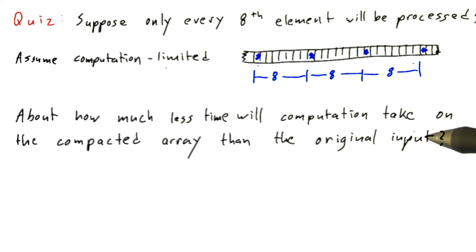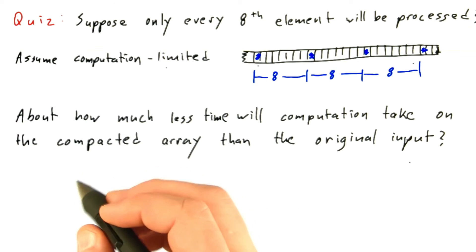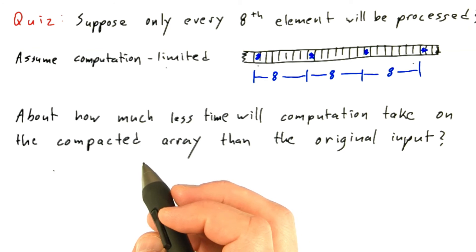The question is about how much less time the computation will take if a thread is launched for every element of the compacted array rather than for every element of the original array. In other words, how much faster is it to run on the compacted array? Will it be 8x faster? 4x faster? Or the same speed, 1x faster?